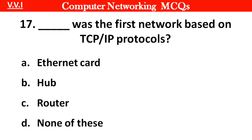Question 17: Blank was the first network based on TCP and IP protocol. Right answer is option D: None of these.